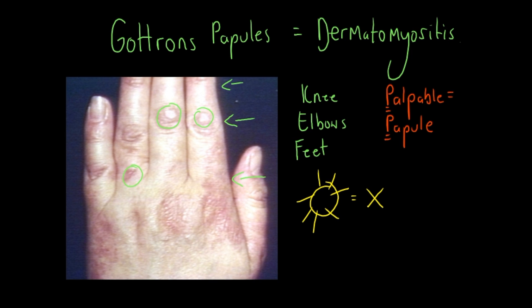This is important to note because papules are distinct from macules, which are not elevated. Gottron's Papules are distinct from Gottron's sign, which are macules over the same anatomical distribution.